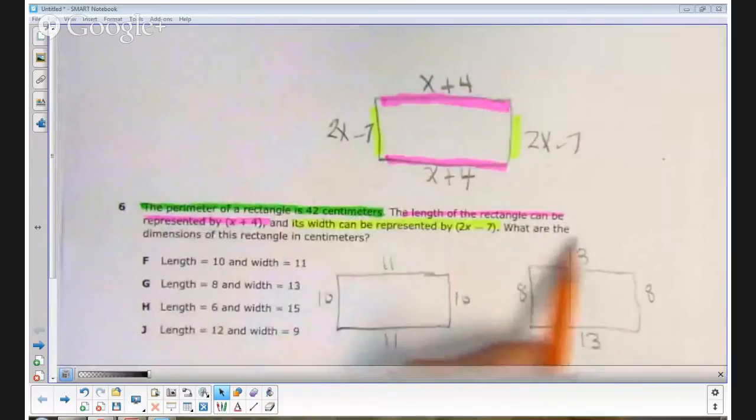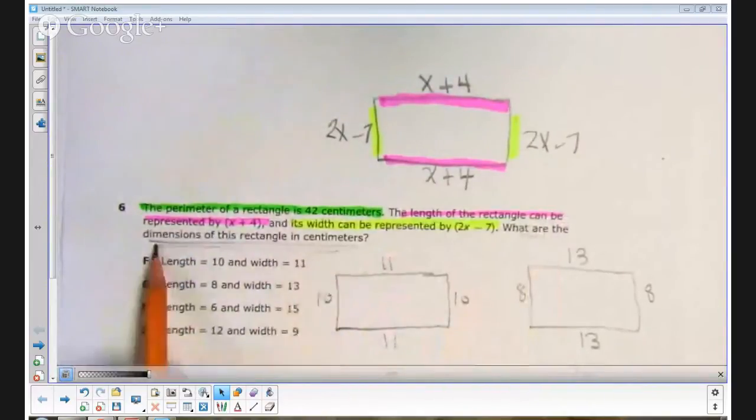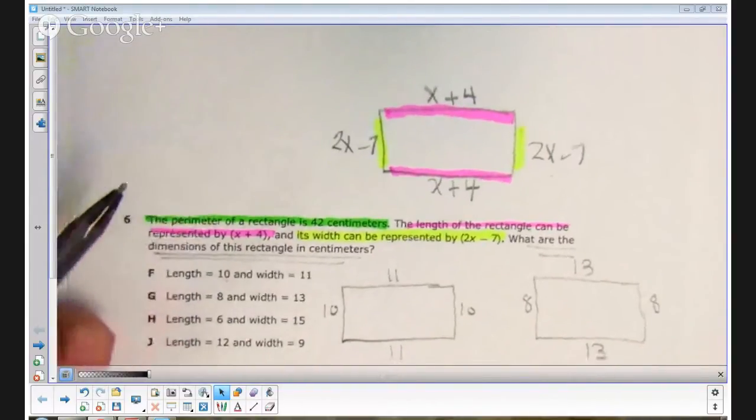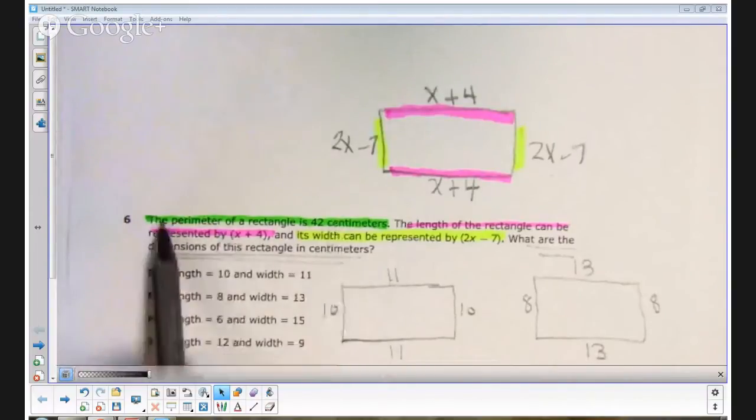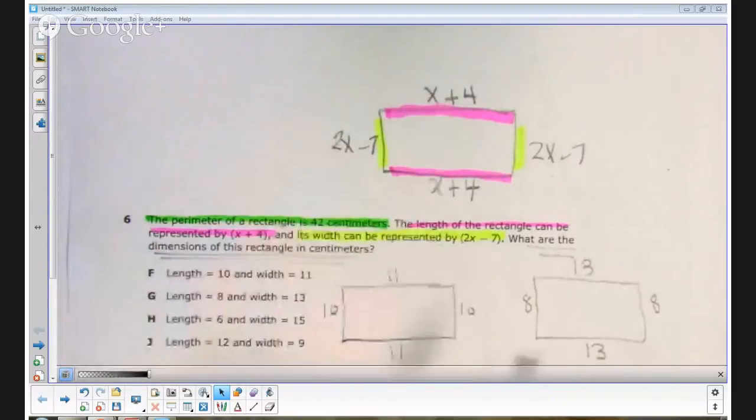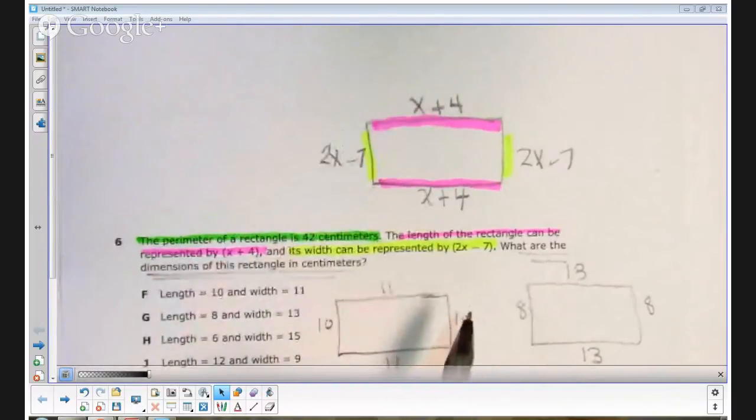Okay, now it says what are the dimensions of the rectangle in centimeters? So it's really important here to notice it did not ask for the value of x. And that is a common mistake that some students might make on this problem. They may look for the value of x. When they see a variable in an algebra problem, that's kind of the first thing that pops into mind. So they don't ask for that, but they ask for the dimensions of the rectangle in centimeters. Well, what I'm going to do to start with is go ahead and make an equation out of this first statement. It says the perimeter of a rectangle is 42 centimeters.